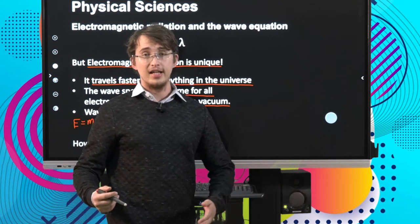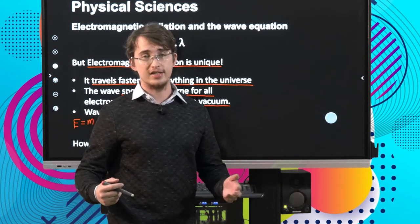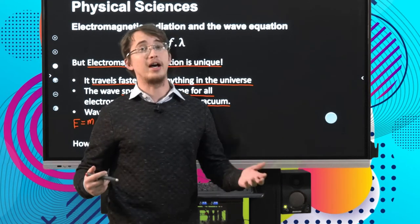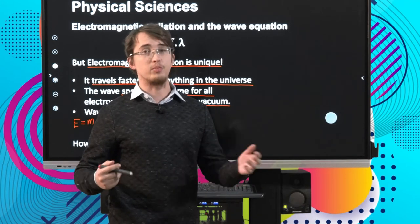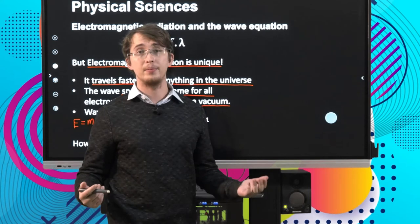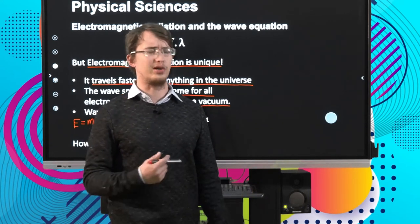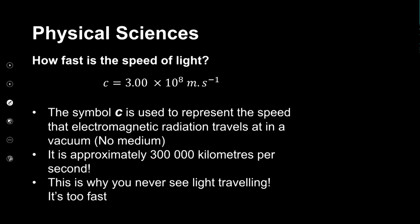So how fast is that? It seems like a pretty big number — it's got 8 zeros after that 3. Think about it: when you're driving on the road in a suburban area you're only doing 60 kilometers per hour. If we convert c from meters per second to kilometers per second, we can see that it's 300,000 kilometers per second — significantly faster than you would go on the highway, and significantly faster than any of us will ever go. This is why you'll never see light traveling — it's just too fast.